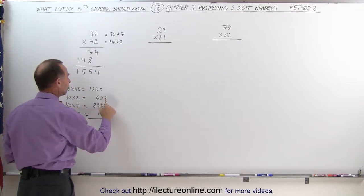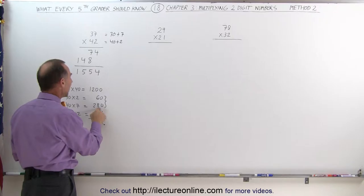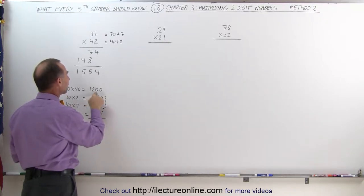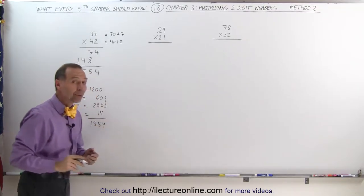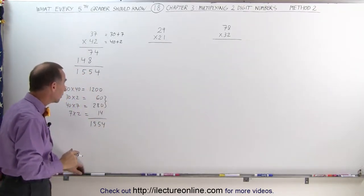First I add these two together, that gives me 340, add that to 1,200, that gives me 1,540, add 14, that gives me 1,554. And with a little bit of practice, you can actually do that in your head.